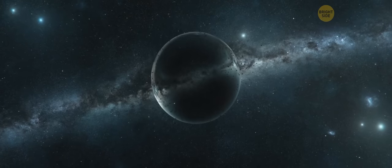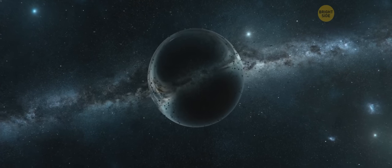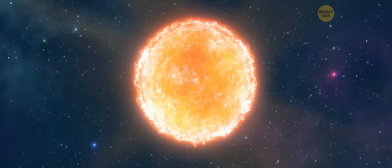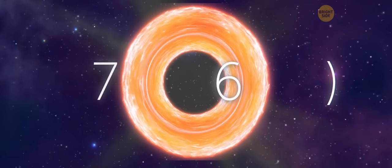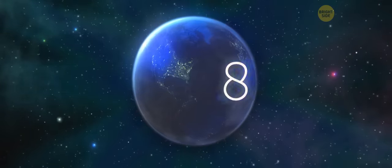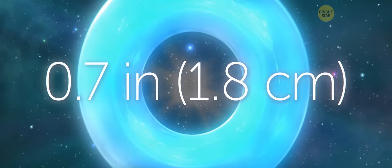Any object can become a black hole if it's compressed to a certain size. For example, the Sun can become one if it's shrunk to a width of 3.7 miles. And even the Earth, if you squeeze it to a width of 0.7 inches, it becomes a black hole.